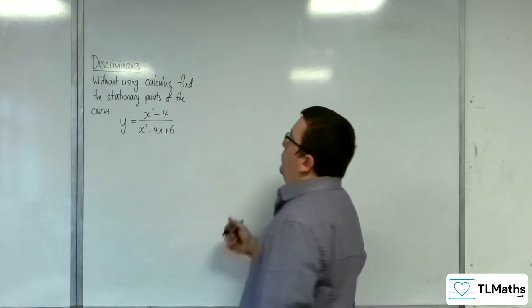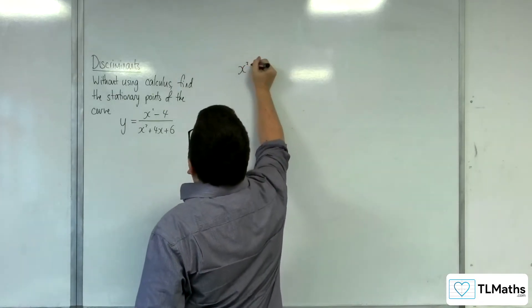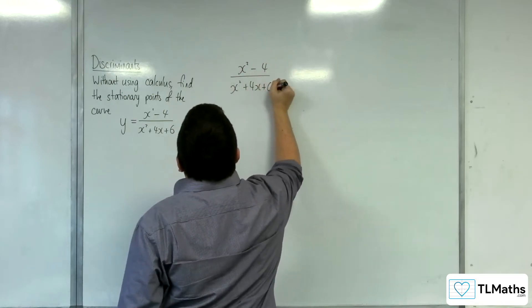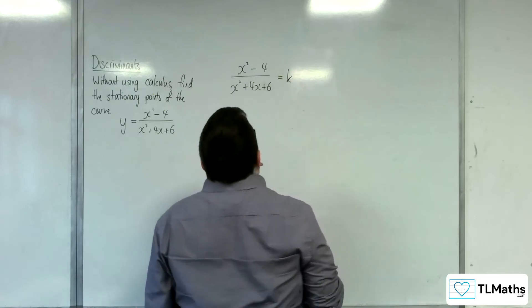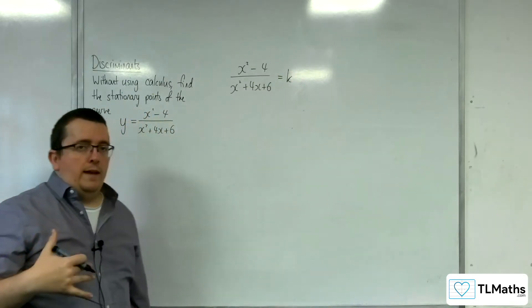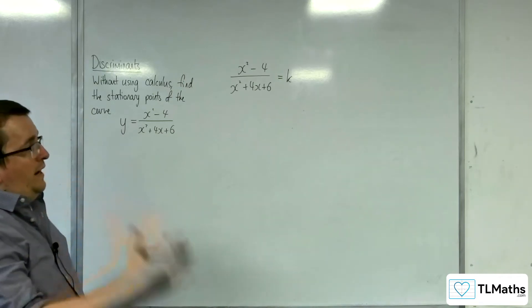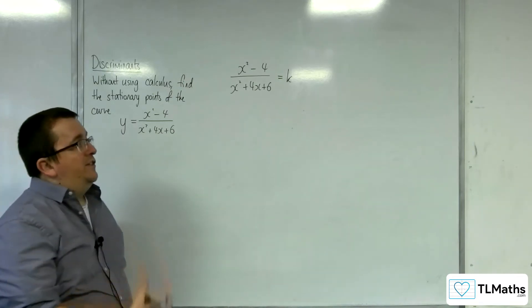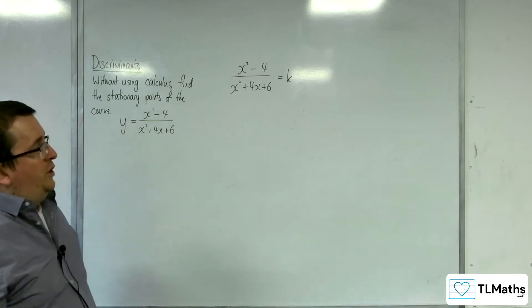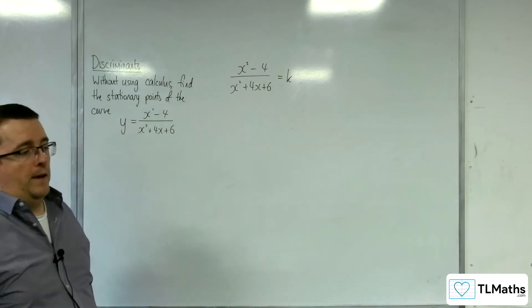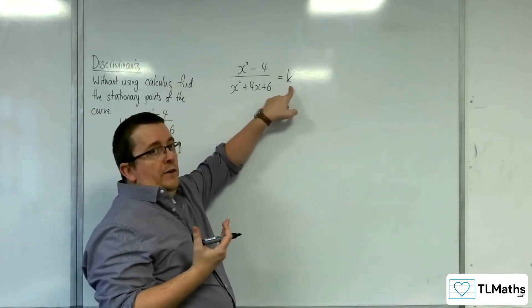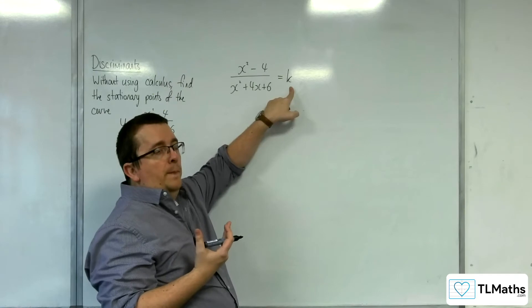So, the way that we do this is we put it equal to k. So, this is effectively saying we've got a horizontal line y equals k. If I put the curve equal to that, I can then turn this into a quadratic problem, use the discriminant in order to find the stationary points. The points where that curve intersect that line at precisely one point.